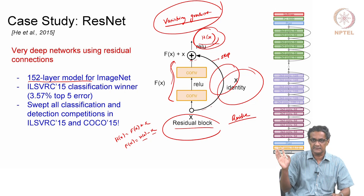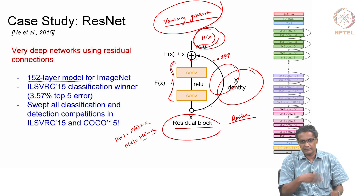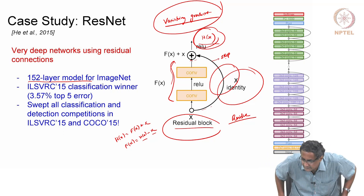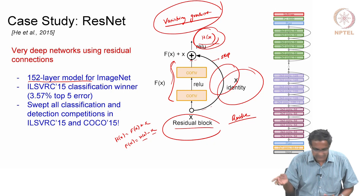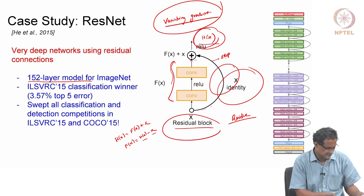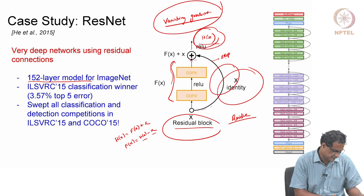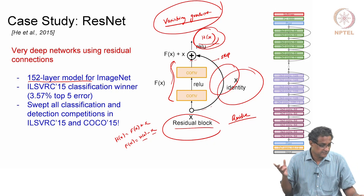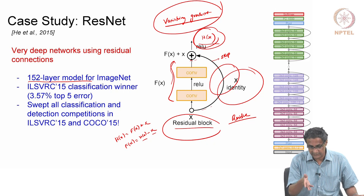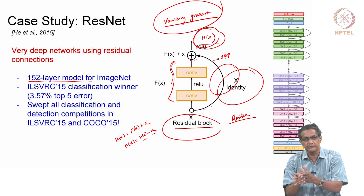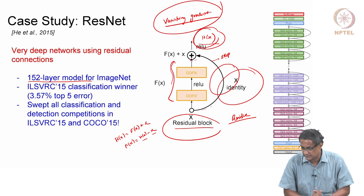ResNet swept all challenges at that period of time in 2015 — segmentation, detection, whatever — wherever you threw this ResNet, it would win. ResNet also has variants depending upon the number of layers: ResNet 34, ResNet 50, ResNet 101, ResNet 152. ResNet 152 is the one that went to do that challenge. The feature maps that come out of these ResNets have been used heavily for other tasks.